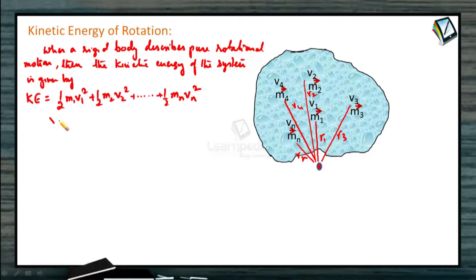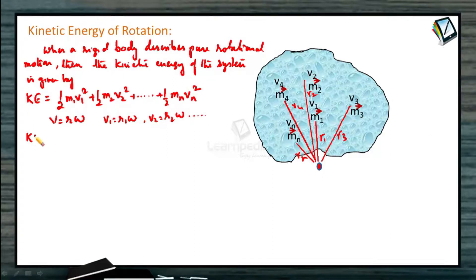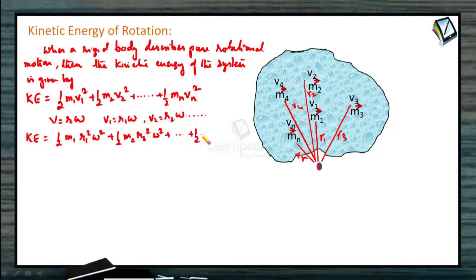Now, as we know, v is equal to r·ω. The angular velocity of every particle is the same. So we can write v1 = r1·ω, v2 = r2·ω, and so on. Then the kinetic energy can be written as half m1 r1² ω² plus half m2 r2² ω² plus so on up to half mn rn² ω².